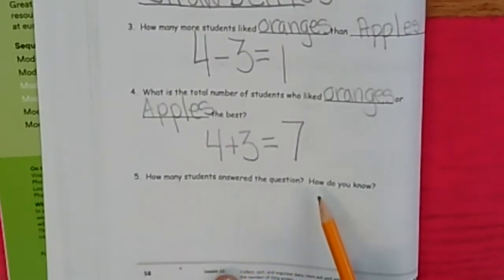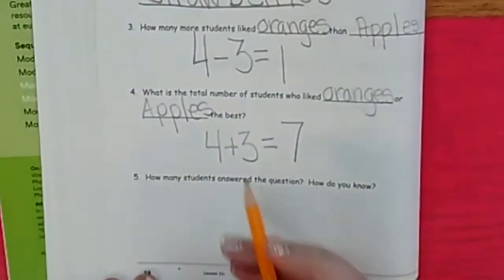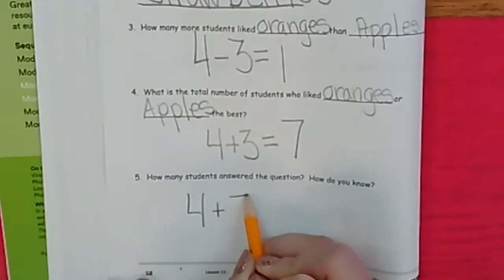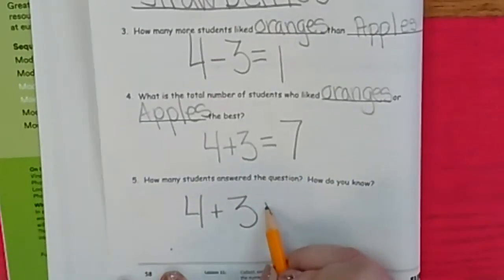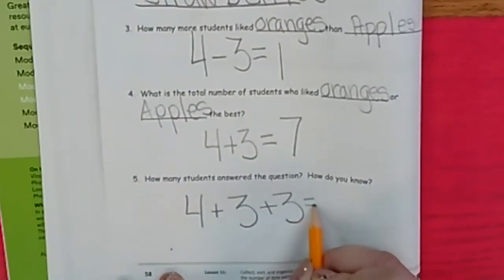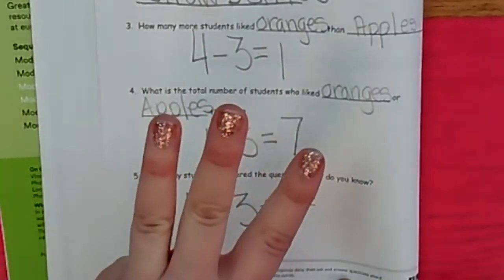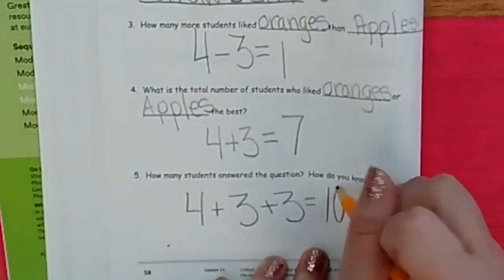How many students answered the question? Oh, we do know. I actually told you at the start, but here's what it is. Four for oranges, three for apples, and three for strawberries. Four plus three is seven, and then we count on. Eight, nine, ten. Ten. Don't forget, but after you wrote your ten, you do have math to do.